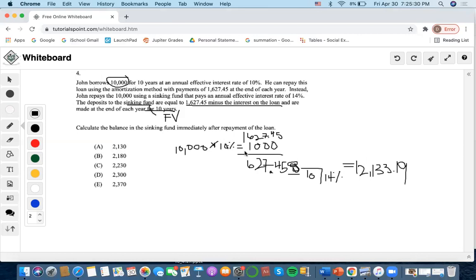Now, since we've calculated the balance in the sinking fund after 10 years, we know that by the end of 10 years we're able to repay the loan. The amount of the loan is $10,000. So we calculated this part.